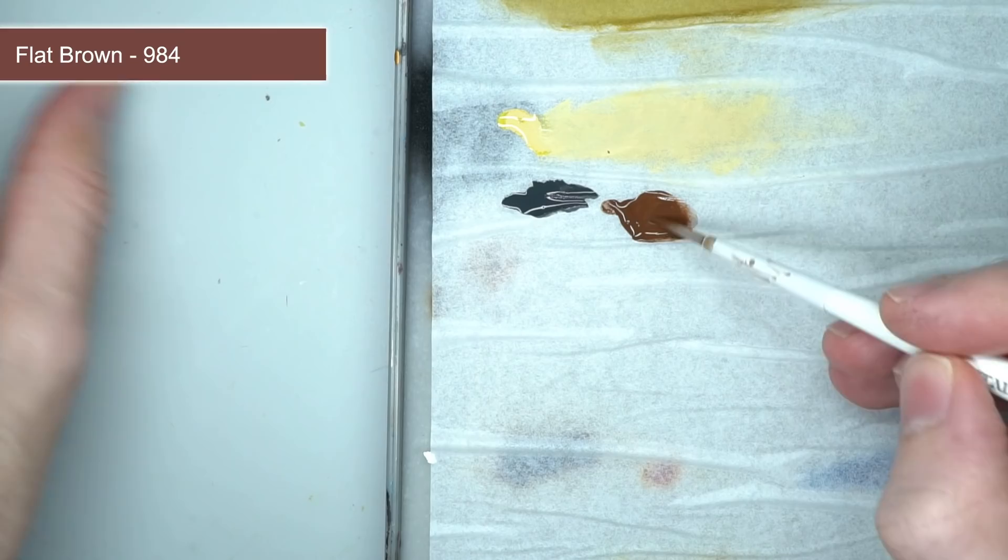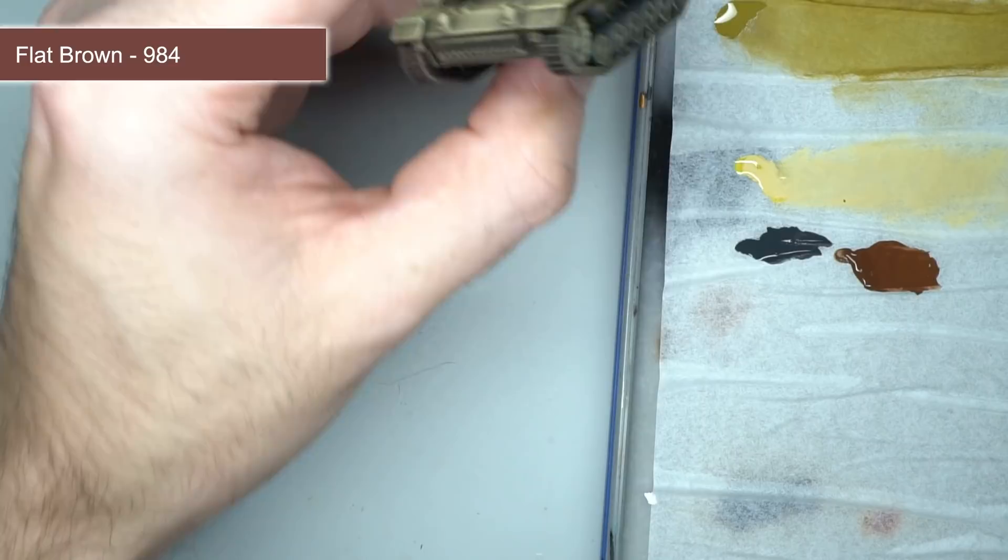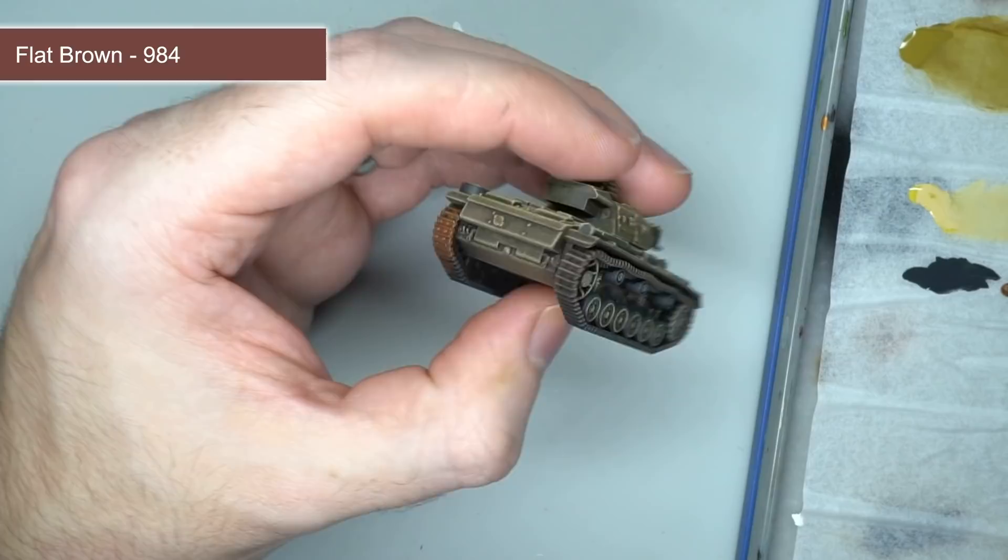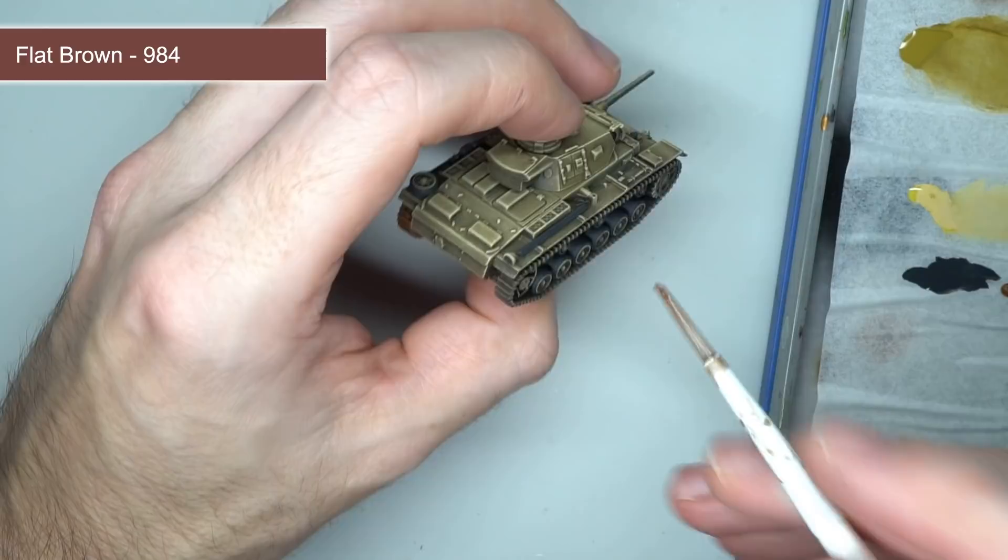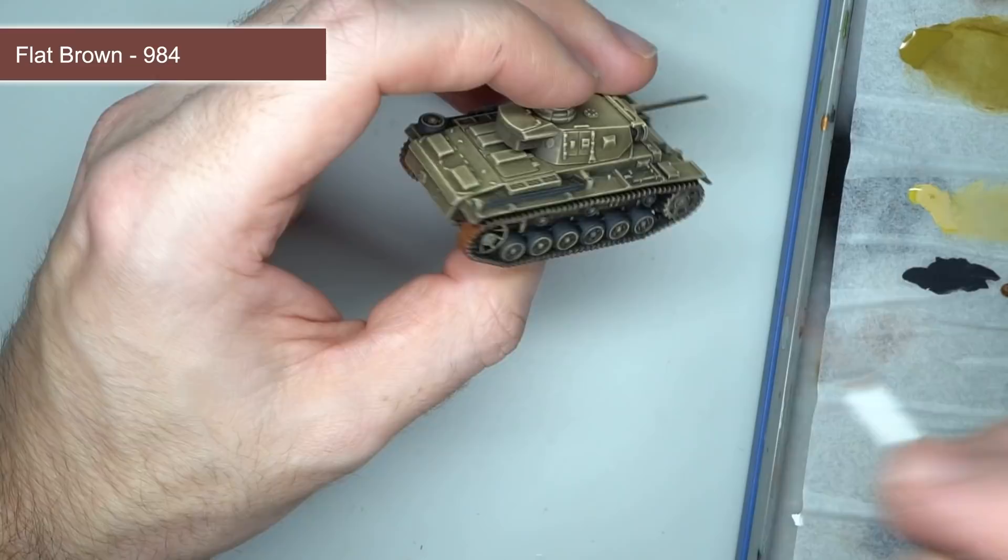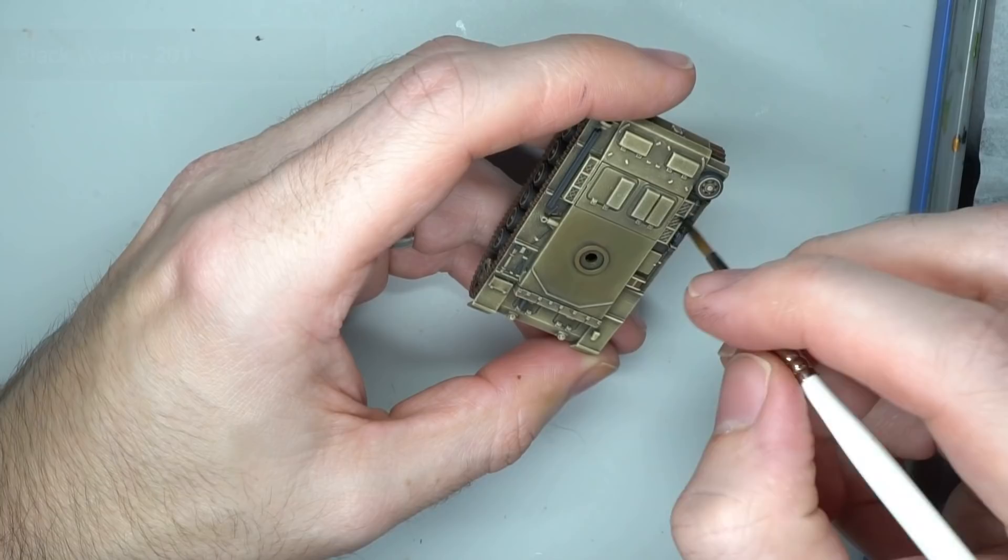While I tried to avoid getting too much paint on the tracks, some tan color inevitably spilled over. To resolve this, I watered down flat brown to create a 50-50 mixture of paint and water. This thin mixture was applied over the tracks in a couple of layers, allowing each to dry fully before adding the next. This quickly returned the rusted metal effect to the tracks.